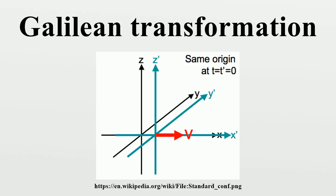The Galilean group is the group of motions of Galilean relativity acting on the four dimensions of space and time, forming the Galilean geometry. This is the passive transformation point of view.